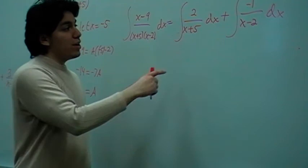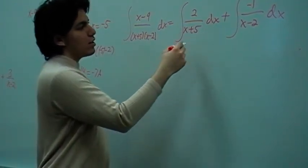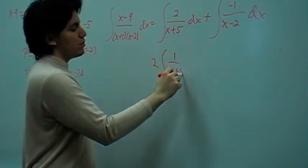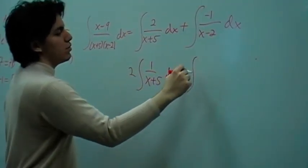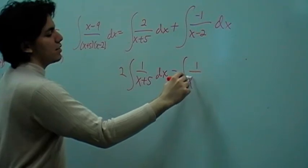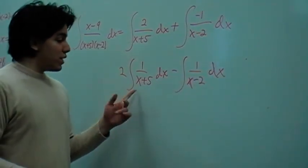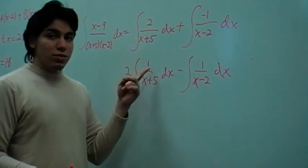Okay, from here, we're going to factor out our constants: 2 times the integral 1 over (x plus 5) dx minus the integral 1 over (x minus 2) dx. And here, you can see that there's a relationship, so we can make a u substitution or just go directly for an ln substitution.